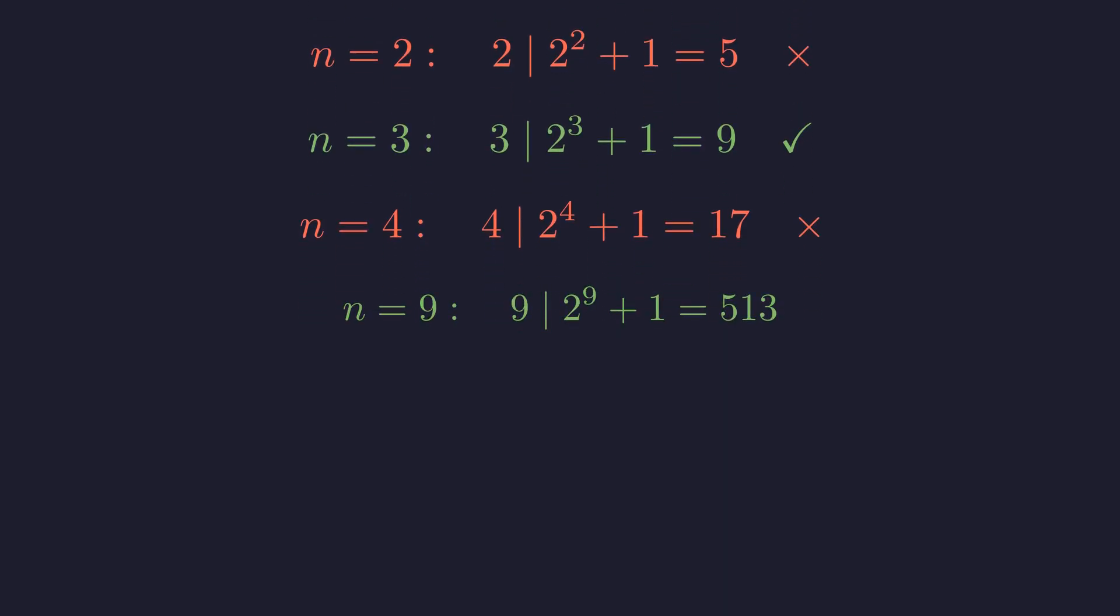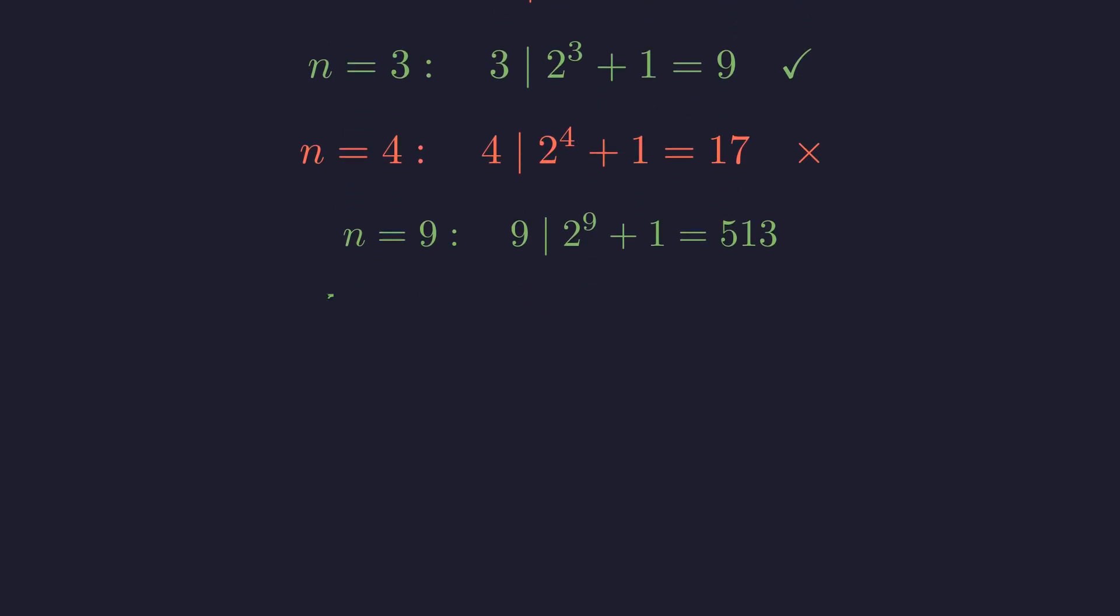Jumping to n equals 9, 9 must divide 2 to the 9th plus 1, which is 513. And this is true. 9 divides 513 exactly 57 times.